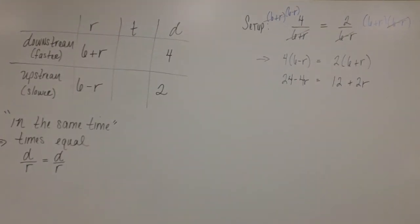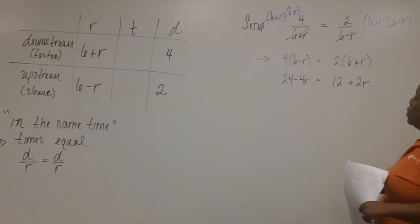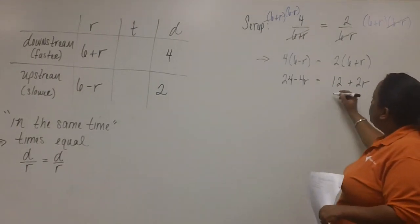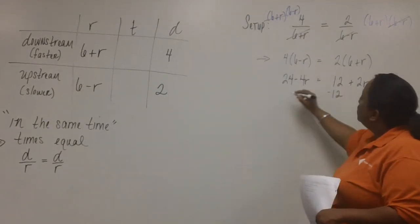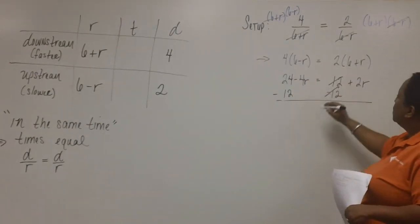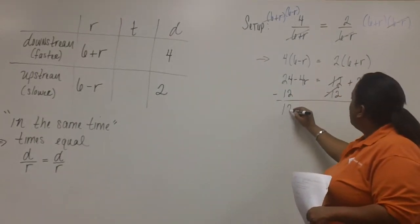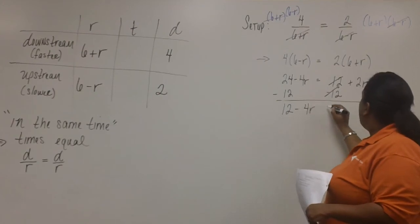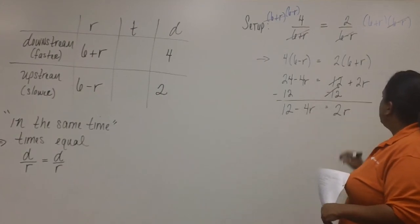Now, we're solving for R, and from here, there are so many different ways to work this problem. So, I might work my problem one way to solve for R, and you might work yours another way. But we should still get the same answer. So, I'm going to choose to subtract twelve from both sides, and we're left with twelve minus four R equals two R.